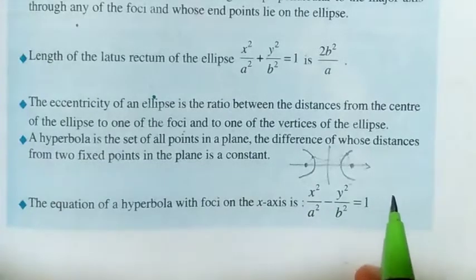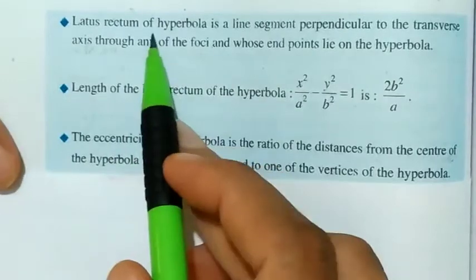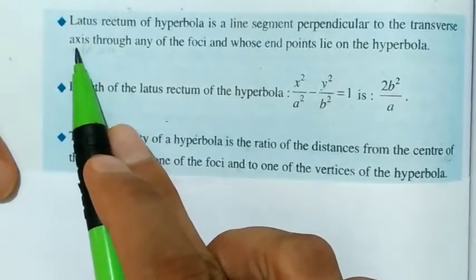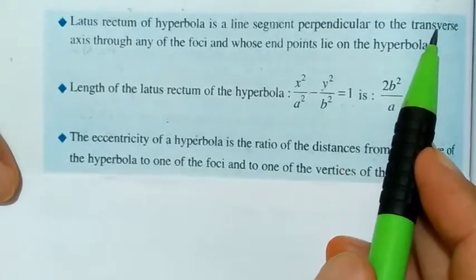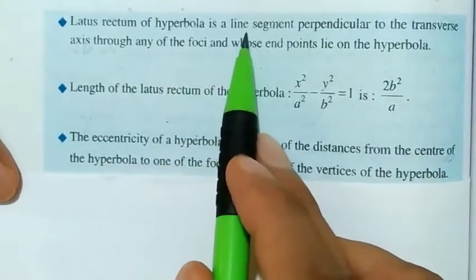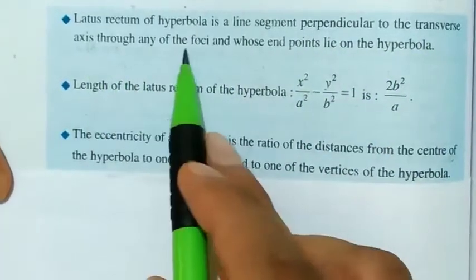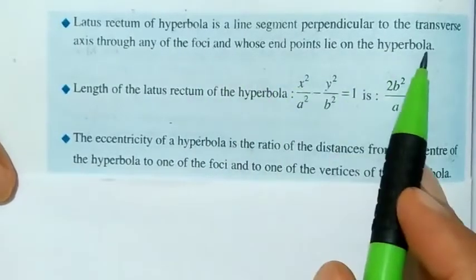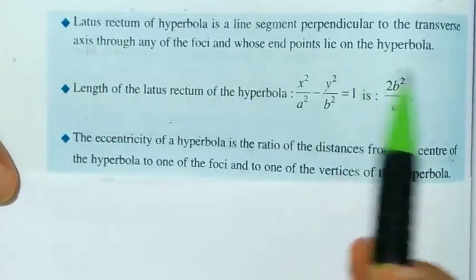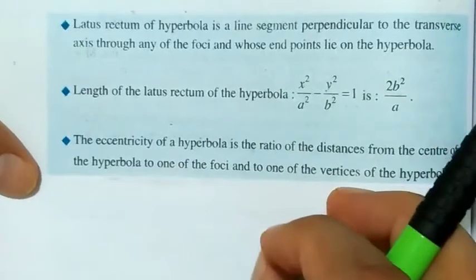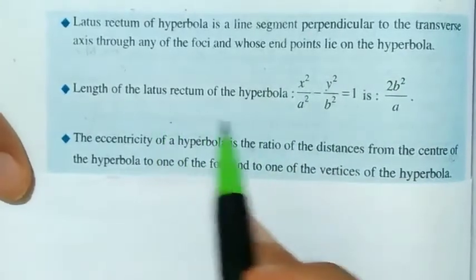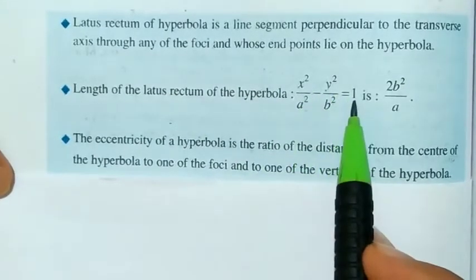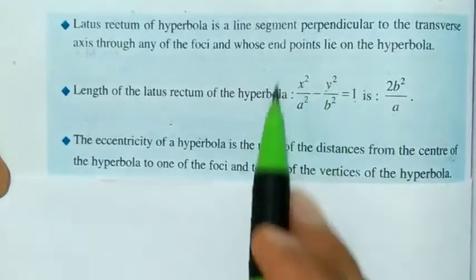The latus rectum of a hyperbola is a line segment perpendicular to the transverse axis (the x-axis in standard form) through any of the foci, whose endpoints lie on the hyperbola. Note that in a hyperbola, the x-axis is the transverse axis and the y-axis is the conjugate axis. The length of the latus rectum of x²/a² − y²/b² = 1 is 2b²/a.